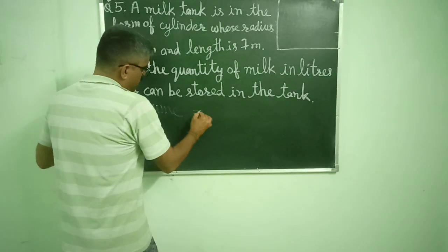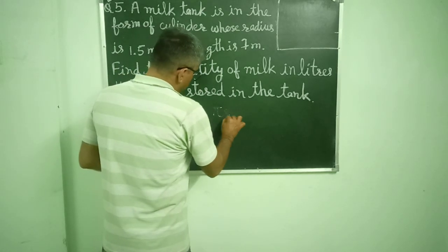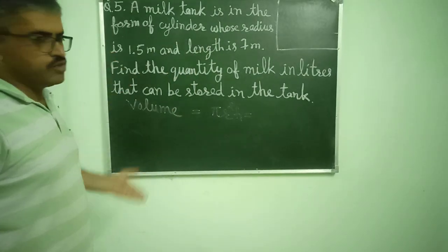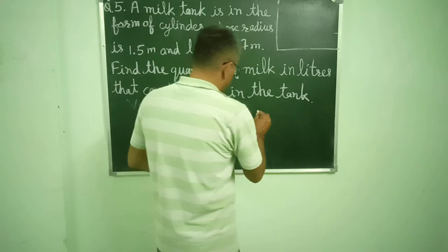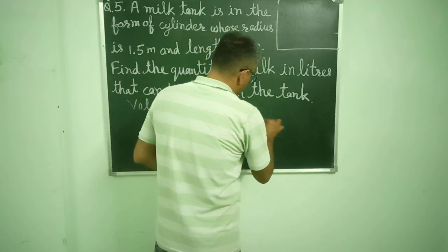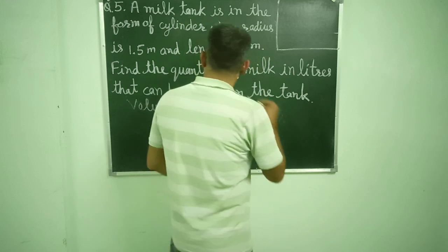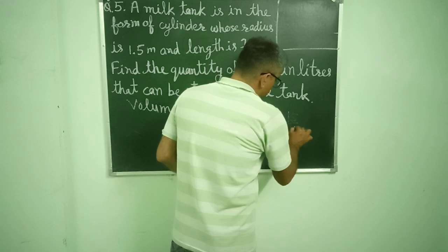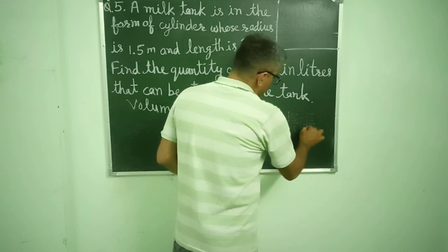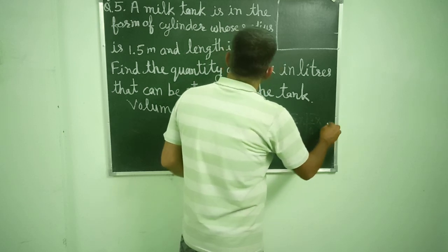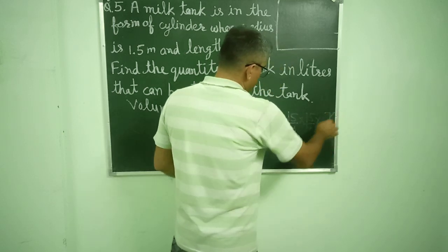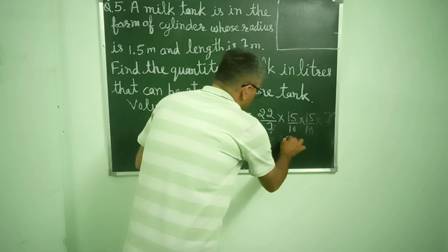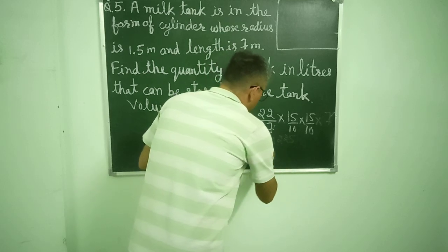Volume is equal to πr²h, where r is equal to 1.5 and h is 7. That will be π times r, 1.5 can be written as 15 by 10, 15 by 10 into h is 7. This will be 22 into 225 divided by 100.